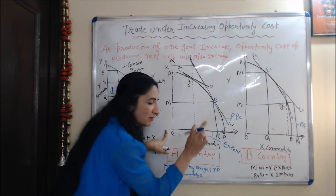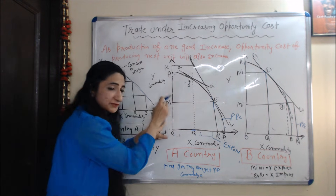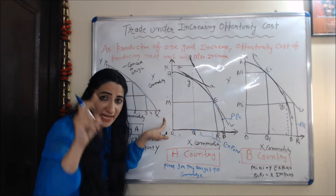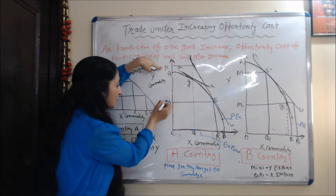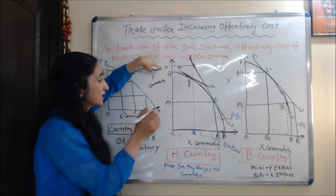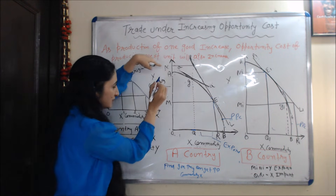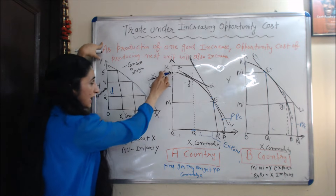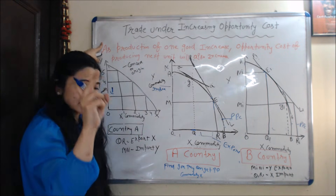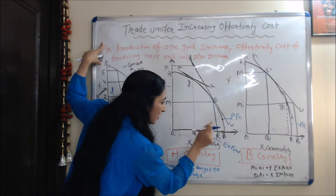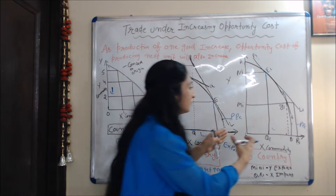Because after trade Country A reduced the production of Y commodity, Country A is importing NM amount of commodity Y. So after trade, Country A is exporting QR amount of commodity X and importing NM amount of commodity Y.